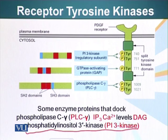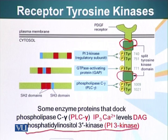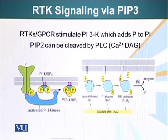Here we have the basic generic structure of a receptor tyrosine kinase. You can see the kinase domain, which has been split, and other additional residues — amino acids present in this protein — which can be phosphorylated. When these receptors are activated and add phosphate groups, other proteins are attracted.